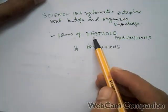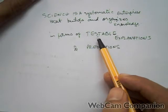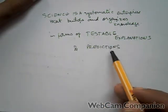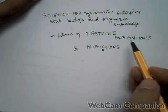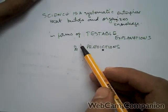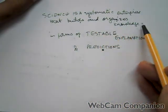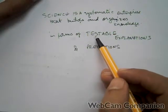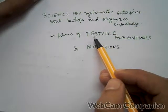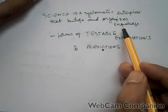These are two important things: first, testable explanations; second, predictions. Testable explanations means that all knowledge created by science should be testable. You should be able to design a test for it.